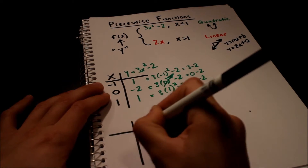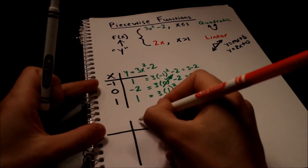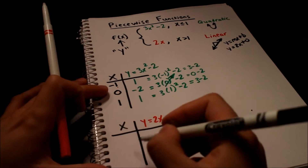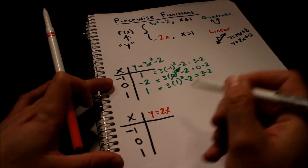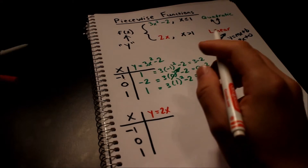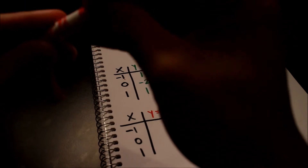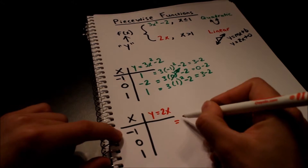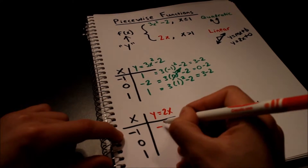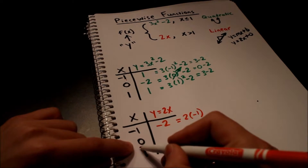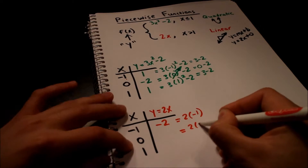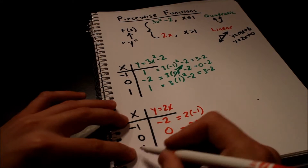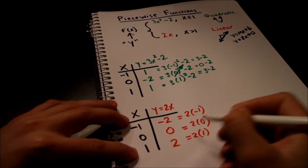Now let's do the other table for y equals 2x — this one is a lot easier. We pick the same points: negative 1, 0, and 1. 2 times negative 1 is negative 2. 2 times 0 is 0. 2 times 1 is positive 2. So we've got two sets of y values and we can put them onto one big graph.